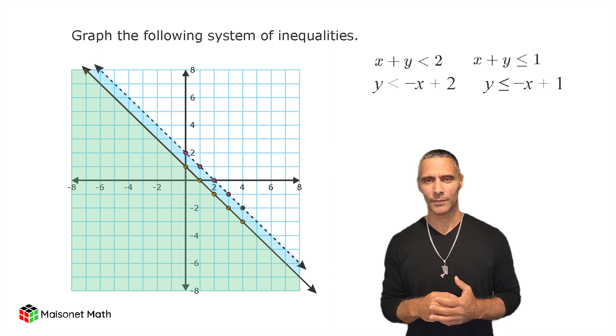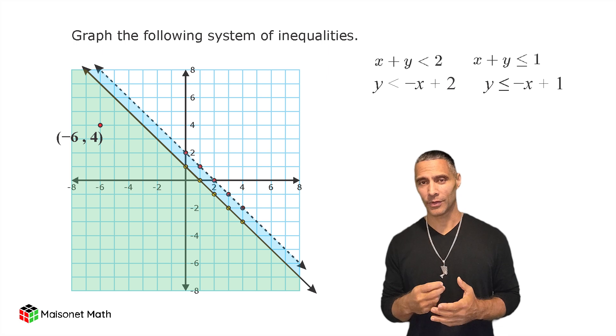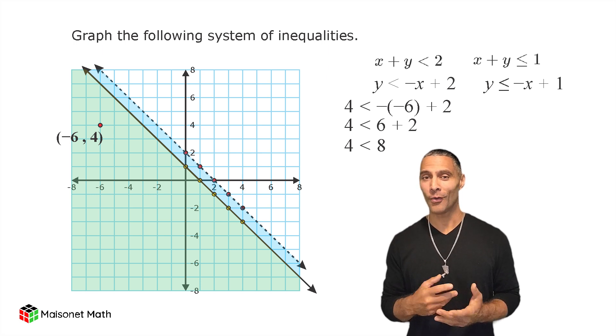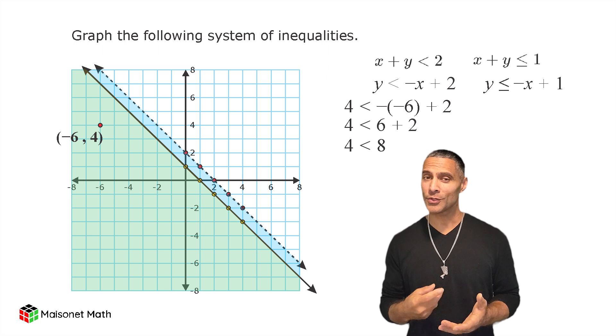For example, consider the point negative 6 and positive 4. Substitute it into both inequalities. For y is less than negative x plus 2, we have 4 is less than 6 plus 2 after substituting, which simplifies to 4 is less than 8, which is a true statement.